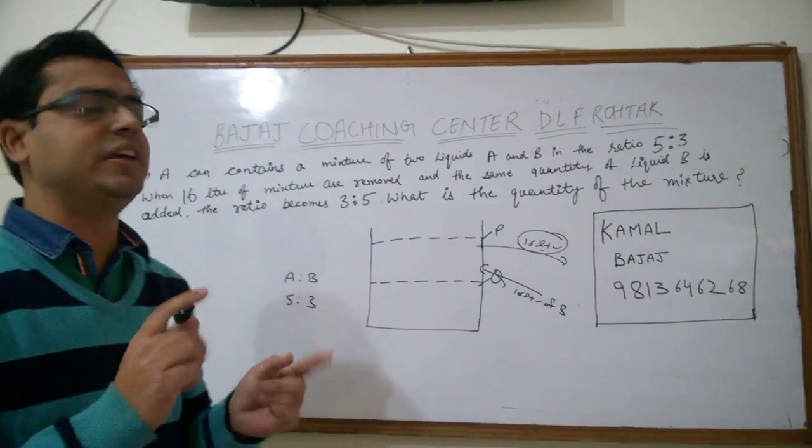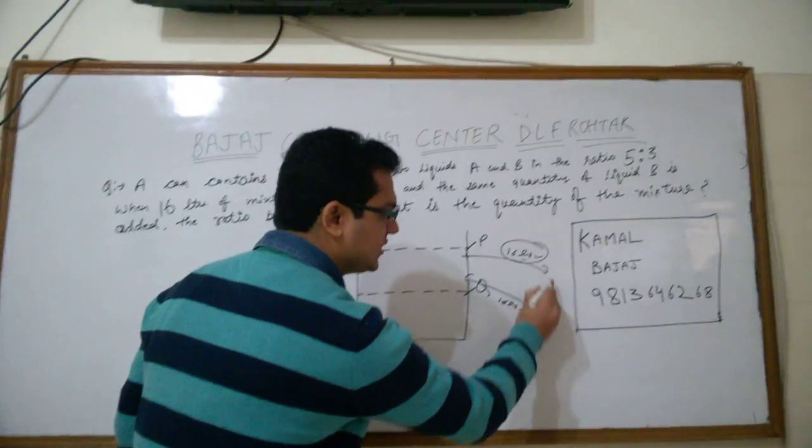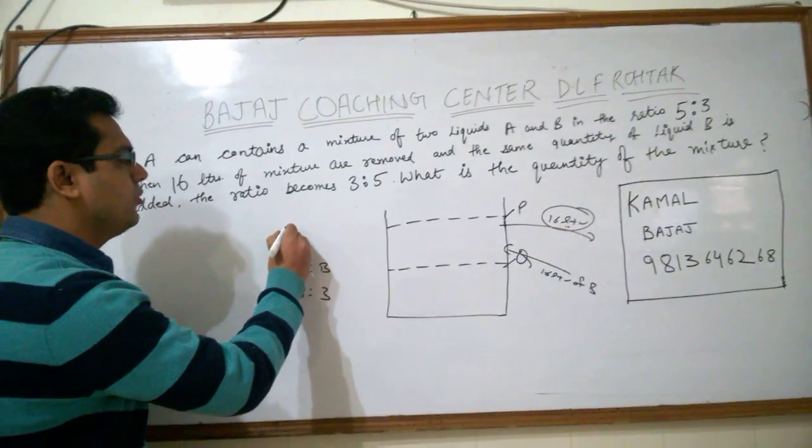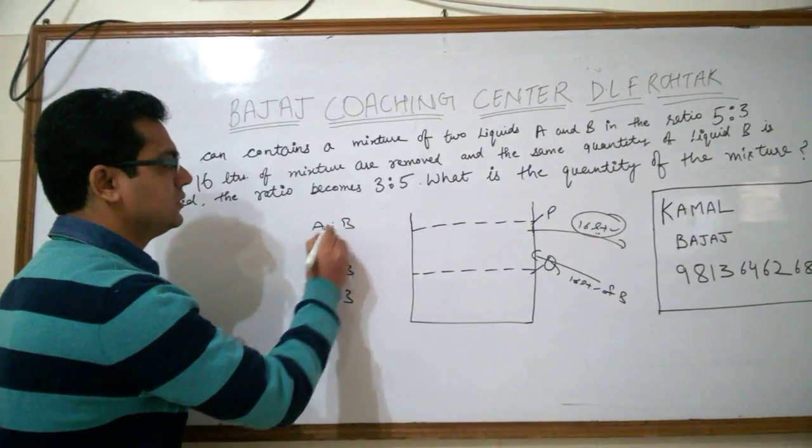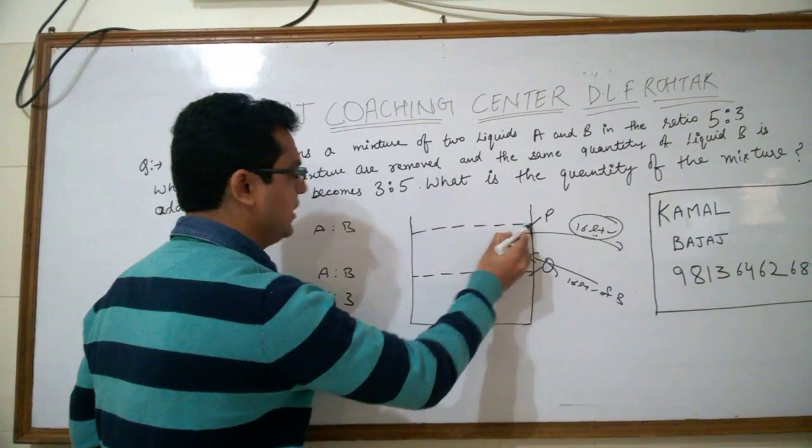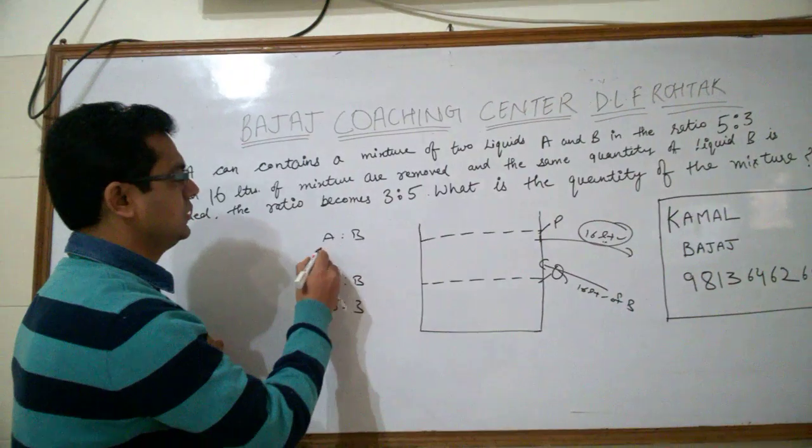Now, you are taking 16 litres of the mixture and adding 16 litres of B. The new ratio becomes, again the level comes down to P because you are adding 16 litres of B and the new ratio becomes 3 is to 5.